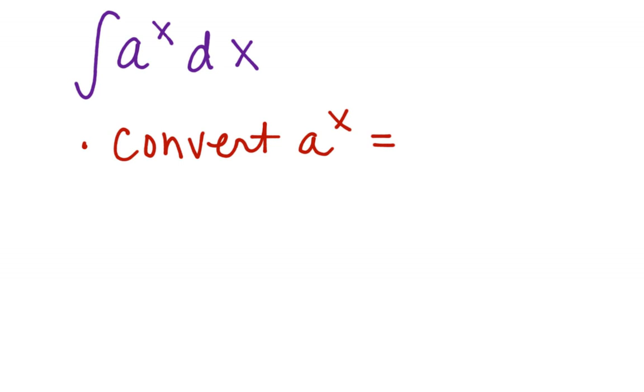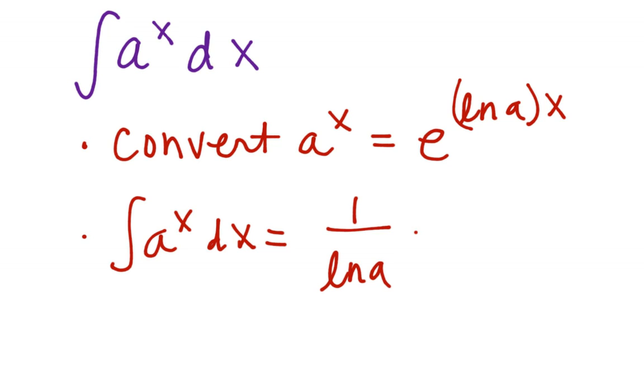So we're going to look at integrals in the form a to the x dx. Now we have two options. You can actually convert a to the x to base e using this conversion, or you can actually use this basic formula. The integral of a to the x dx is equal to 1 over ln a times a to the x, plus c.